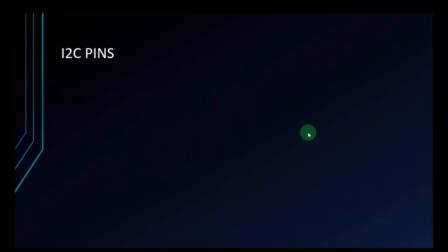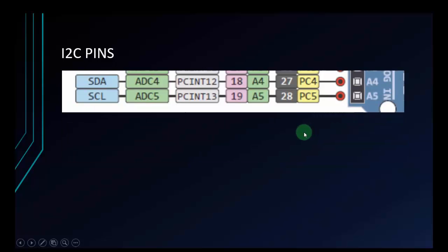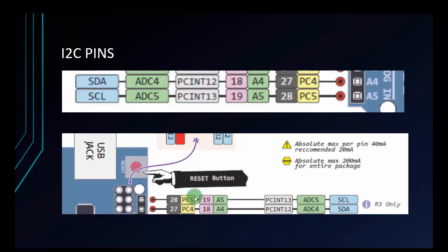Next are the I2C pins of Arduino. The I2C pins use just 2 pins to communicate with the device. The first is SDA, which means serial data, and the second is SCL, which means serial clock. The SDA is pin A4 and the SCL is pin A5. There is also another position for these 2 pins, right next to the USB jack.